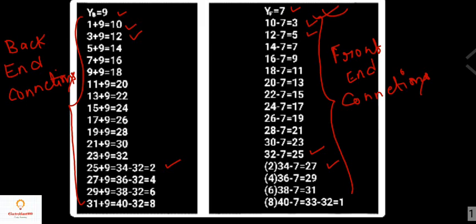Since 25 plus 9 equals 34, but there are only 32 conductors, we subtract 32: 34 minus 32 equals 2, so the 25th conductor is connected to the 2nd conductor. Then 27 plus 9 equals 36, and 36 minus 32 equals 4, so the 27th conductor at the back end is connected to the 4th conductor.